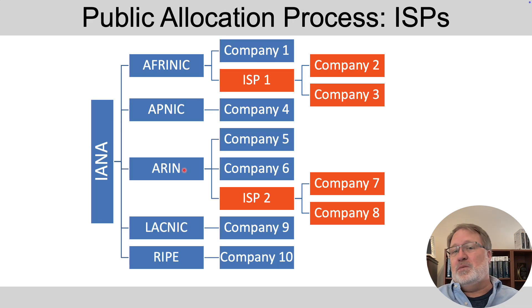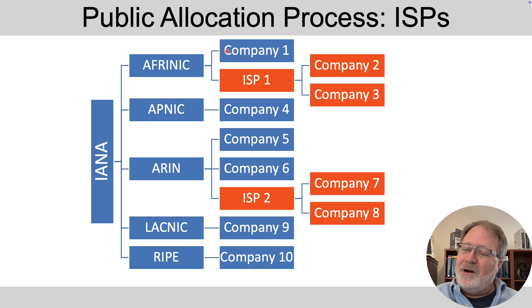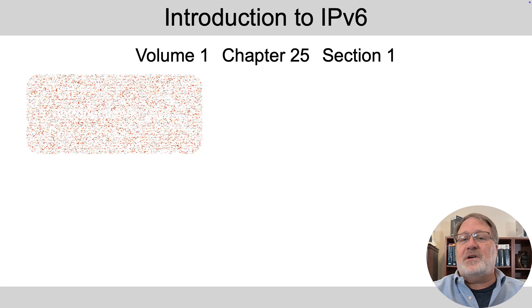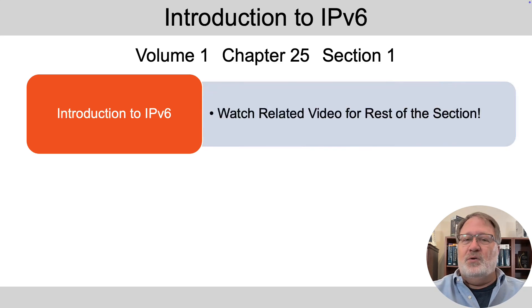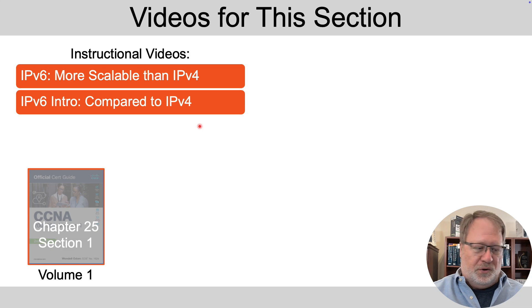The nice thing is the process is still the same. IANA still owns the address space and works with the same five regional registries, who work with ISPs. You can get your assignment either directly from an RIR or from an ISP. For book readers, you'll find similar content in Volume 1, Chapter 25, Section 1: Introduction to IP Version 6. You could probably get away with skipping that section if you watch this video and the related video — which compares version 4 and version 6 for core protocols, routing, and routing protocols.